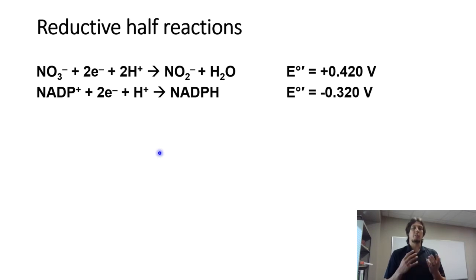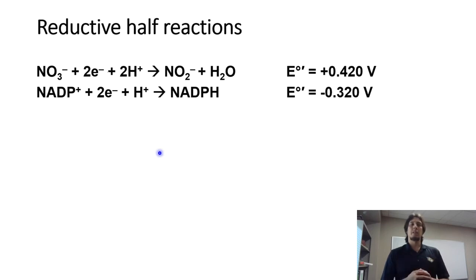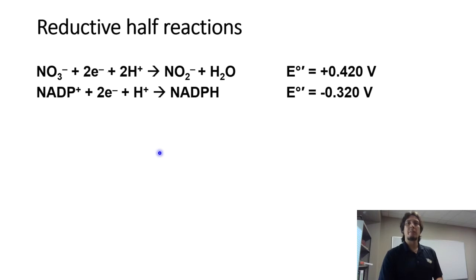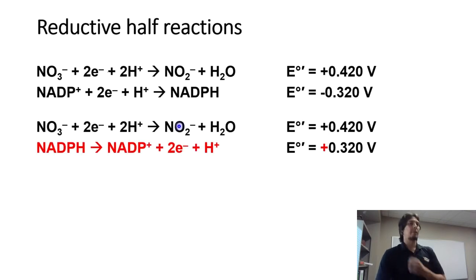Between these two half reactions, we need to figure out which is the reductant and which is the oxidant. We first have to balance the number of electrons on both sides, but since electrons are on the reactant side of both reactions, one of them has to be flipped. The easy way to decide is to look for the half reaction with the more positive reduction potential — in this case, that's the top row where nitrate is reduced.